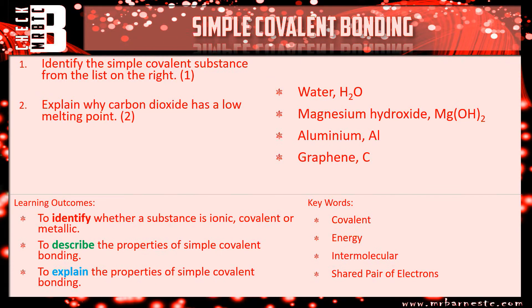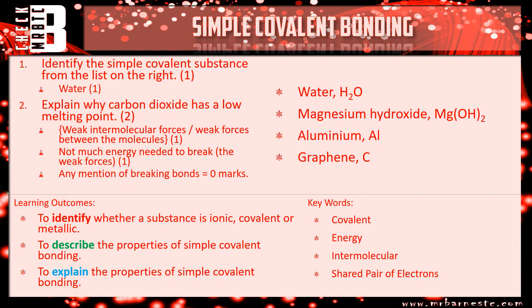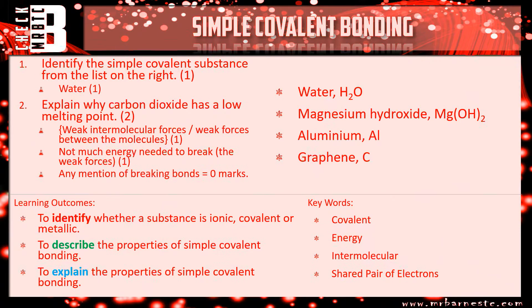The first question — which one is simple covalent? The covalent ones involving only non-metals are water and graphene, so we can rule out magnesium hydroxide and aluminium. The simple covalent one has the fewest atoms — graphene has thousands of atoms, so the answer is water, H2O. Question two — why does carbon dioxide have a low melting point? There are weak intermolecular forces between the molecules, and not much energy is needed to break those weak forces — that's two marks. Never mention breaking covalent bonds; covalent bonding is strong, so you'd get zero marks.